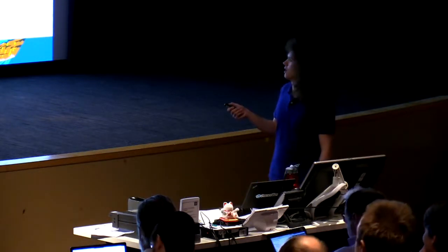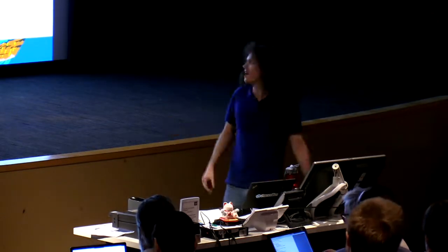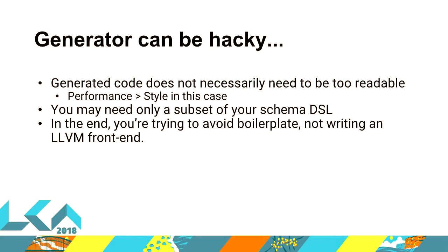Another point relevant to the WSDL example: you need to version your schemas. Either keep them under source control, or if you're fetching externally, still keep it under source control. If you're not going to do that, you need some kind of versioning scheme. You don't want your build process to be non-deterministic or determined by some external entity. Generated code can be a little bit hacky — it's not a huge problem. Generated code doesn't really need to be too readable. Performance is generally more valued than style in your generated code. You may also just need a small part of your DSL — you don't have to implement the entire parser for your complete DSL.